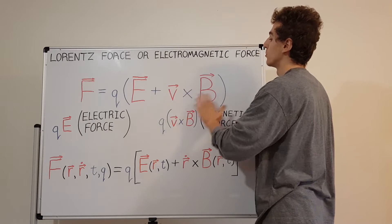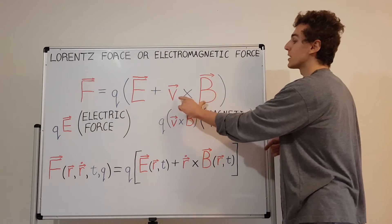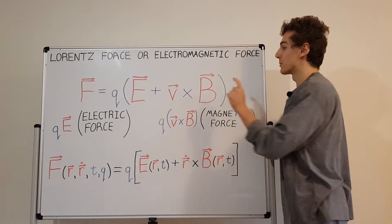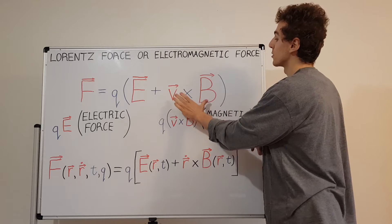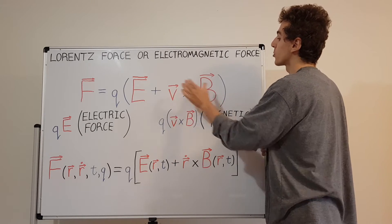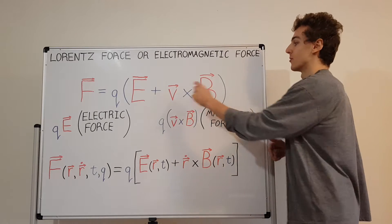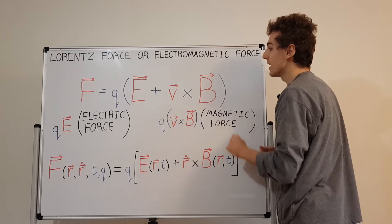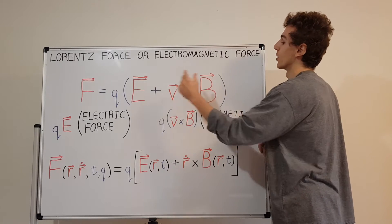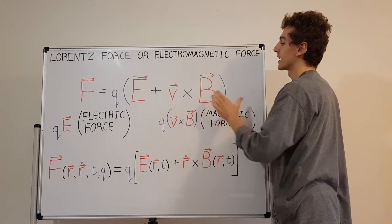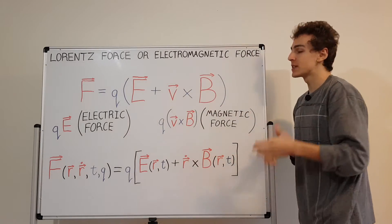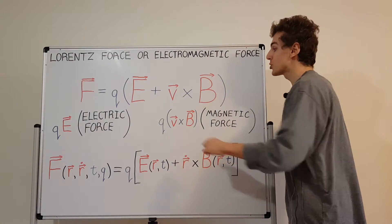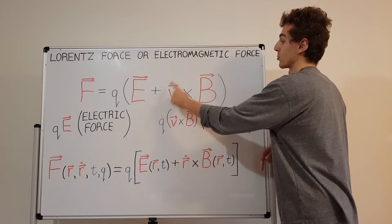This cross product outputs a vector, but we are not allowed to swap the order. You can't put B cross V instead of V cross B, because the cross product is not commutative. B cross V gives the negative of V cross B — swapping the order gives the negative, meaning the vector points in the opposite direction. So always make sure V is first when writing these equations out.